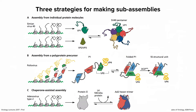Sub-assemblies can be made in different ways. There are three strategies. First is assembly from individual protein molecules — for example, the SV40 capsid pentamer sub-assembly is made up of five molecules of VP1 and one molecule of VP2/3. These are made individually, VP1 from one mRNA and VP2/3 from another, and they assemble spontaneously with help from chaperones. The information for folding and assembling into pentamers is essentially all encoded in their sequence. These pentamers are a sub-assembly that eventually forms the complete capsid.